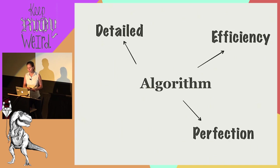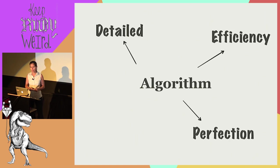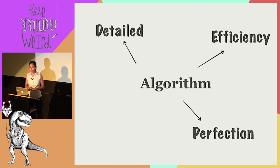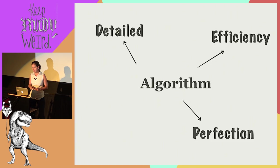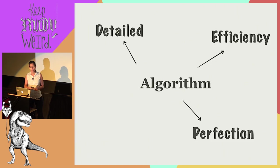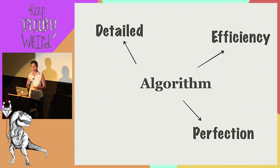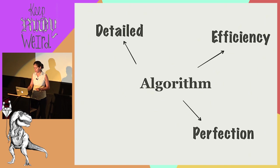An algorithm also embodies the search for efficiency and perfection. The most important things about an algorithm are that it solves the problem at hand and that it does so efficiently. We always need to find the balance between those two things and know when to stop — is our program good enough, or can it be better?